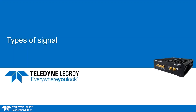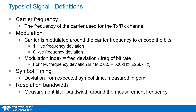Moving on to signal types and definitions: the carrier frequency is the carrier for the channel being used. It carries a modulated signal and is usually downconverted to a low frequency at the receiver. For Bluetooth LE, the carrier is modulated in frequency to indicate a 1 or a 0. A 1 is a positive frequency shift, increasing the carrier frequency, and a 0 is a negative frequency shift, dropping the carrier frequency.